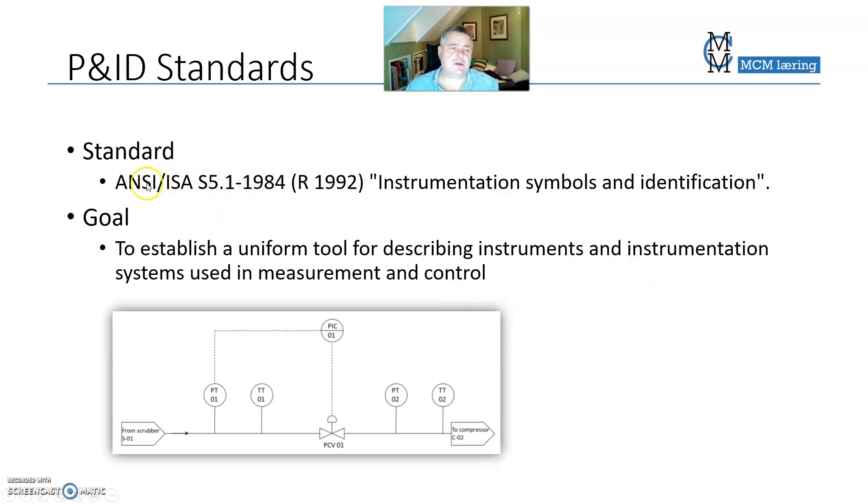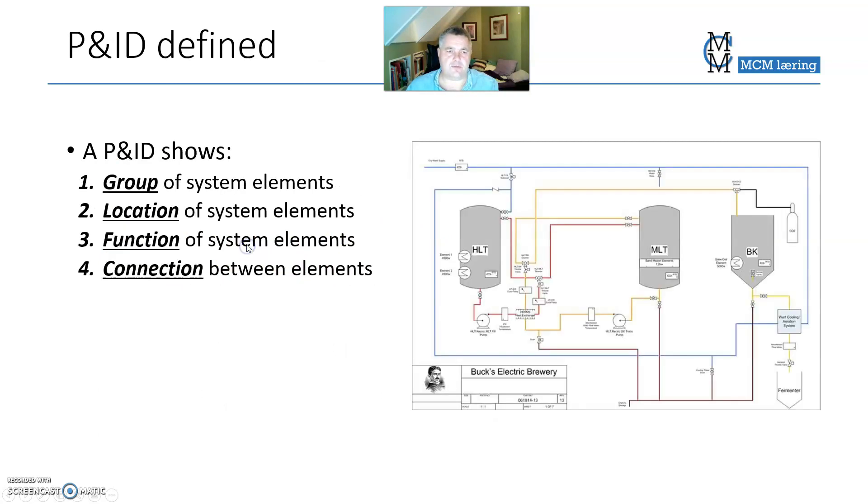Standards: ANSI, American National Standards Institute, and ISA, International Standards Association, standard instrumentation symbols and identification. Like all standards, the goal is to establish a uniform tool for describing instruments and instrumentation systems. The word uniform tool is important when it comes to standards.